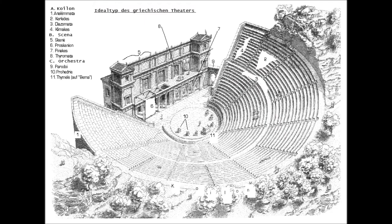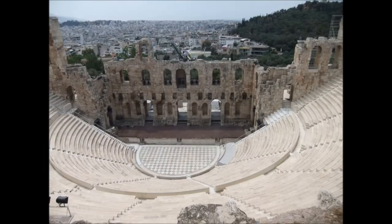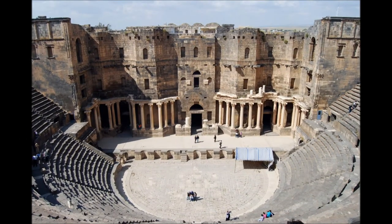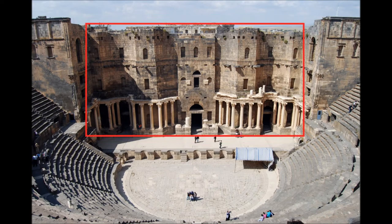The area between the theatron and the skene was called the peridoy. It was essentially an aisle used by actors to come and go. The skene is the backstage area, located directly behind the stage, and often contained either a small room or a tent. It was decorated to correspond with whatever scene the play being performed needed. As time progressed and technology increased, machines could be built into the skene to add special effects such as trap doors and moving stage pieces.